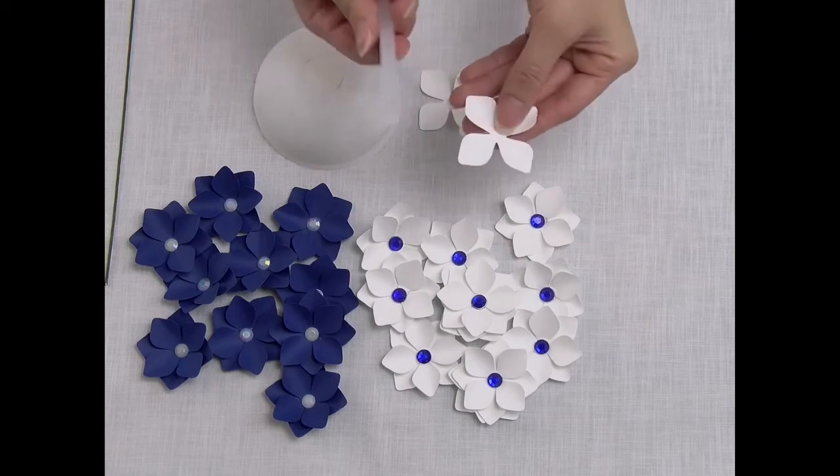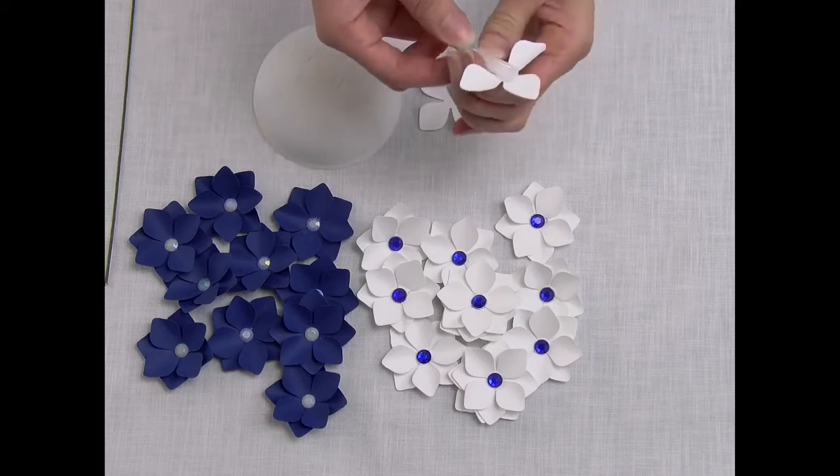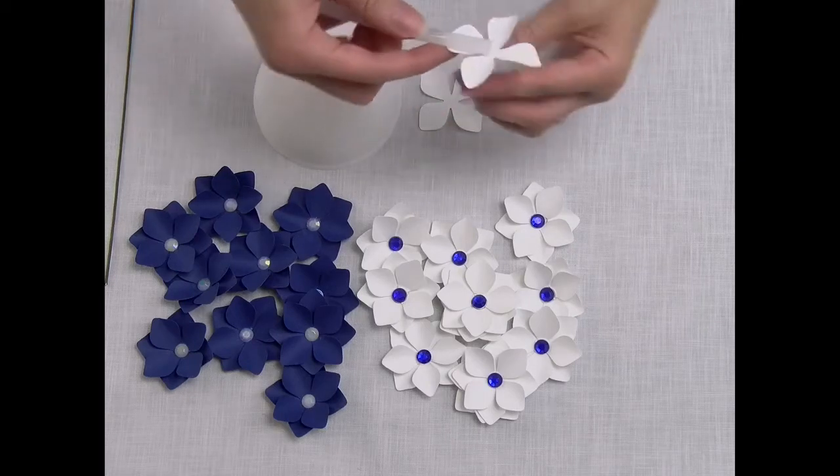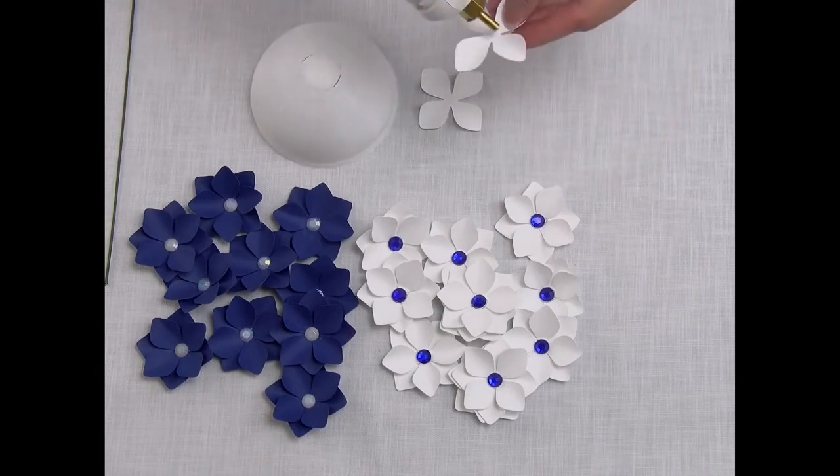To start, you're going to cut out the petal. You're going to use the mini glue stick and then curl the petals upwards for all four sides and do this with all your pieces.